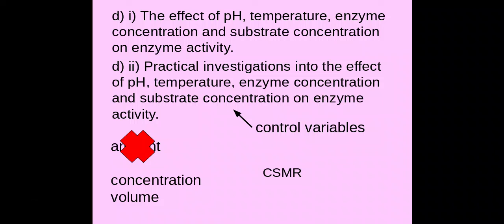So whenever you're talking about experiments I always remember CSMR. So C is whatever you're changing, make sure you're mentioning your control variables there. S make sure that you're saying what you're keeping the same. M make sure you're talking about what you're actually measuring and R make sure you're repeating. So what you're changing, what you're keeping the same, what you're measuring and what you're repeating. It's really important here that with the measuring things that you're talking about...